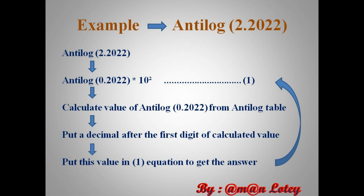Take an example of antilog 2.2022. We should know that we can calculate the antilog of only those digits which are placed after the decimal point. The digits before the decimal point are used as 10 raised to power. Before calculation, we should follow a sequence of steps: first, convert antilog 2.2022 into antilog 0.2022 multiplied by 10 raised to power 2. After making this equation, calculate the value of antilog 0.2022 from the antilog table.